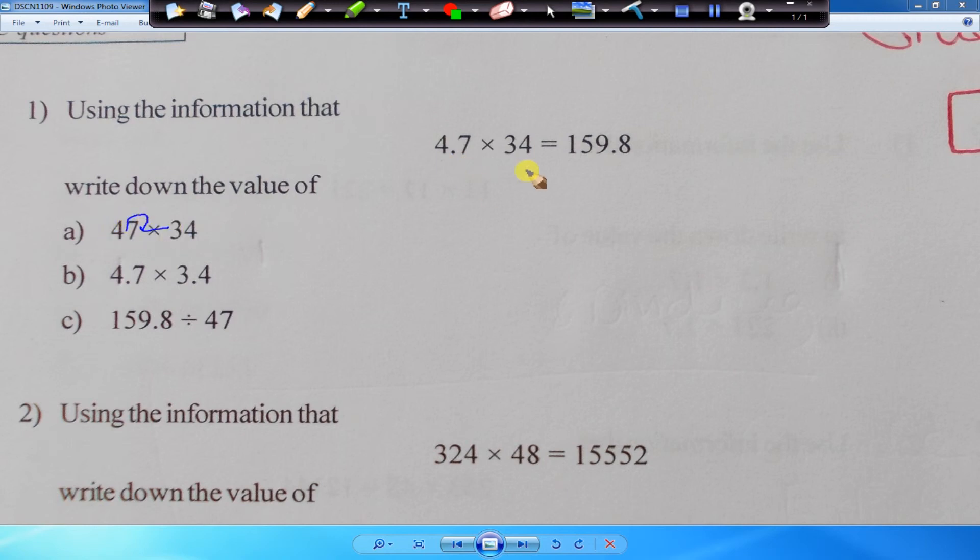Right, so 4.7 here has become 47, ten times bigger. The 34 stays the same. So our final answer becomes, not 1-5, so we have 159.8. If we made this one bigger here, we have to make this question also bigger here, so it gives us an answer of 159.8.